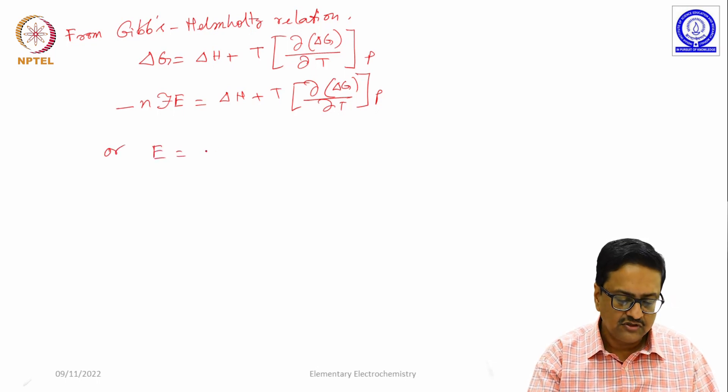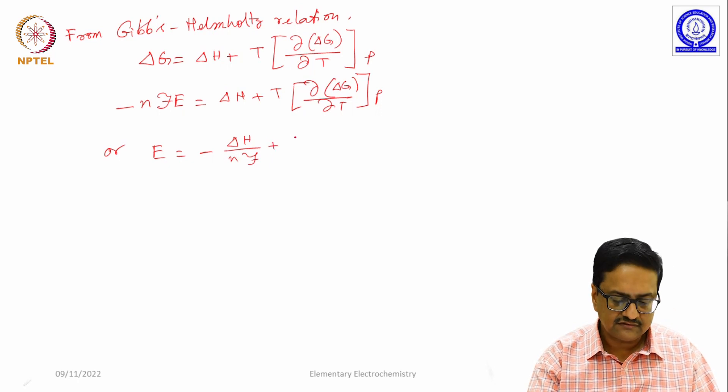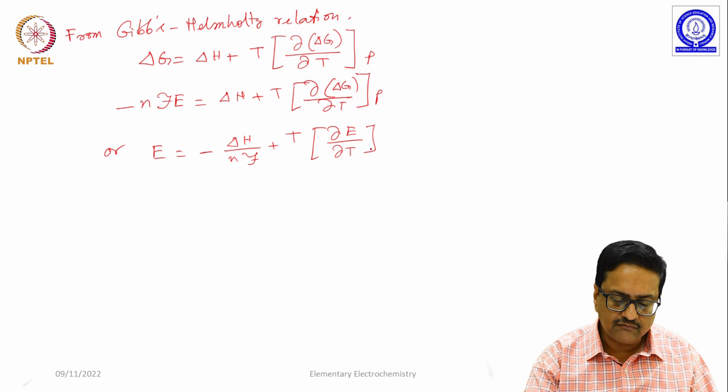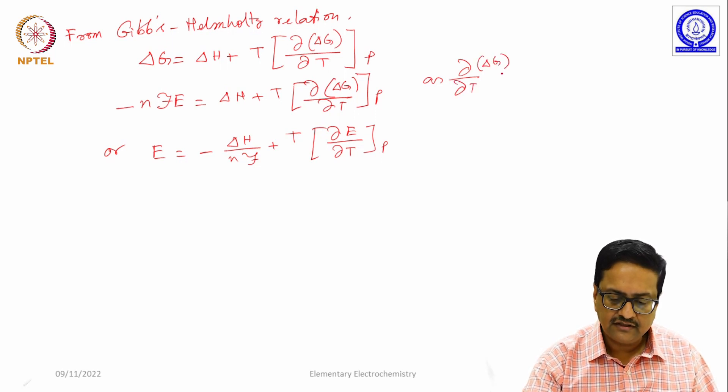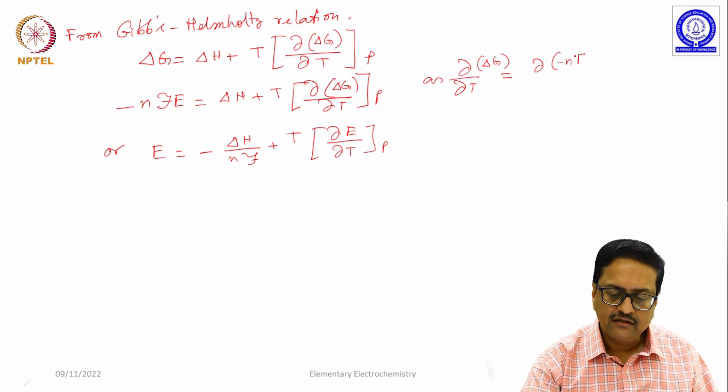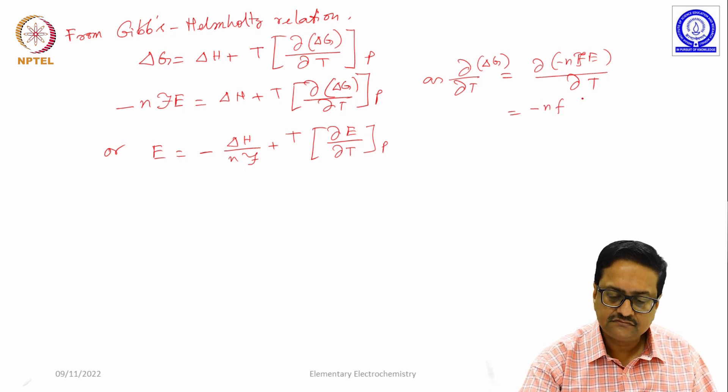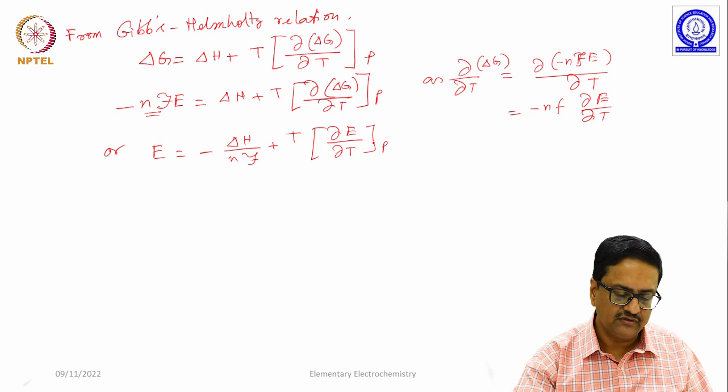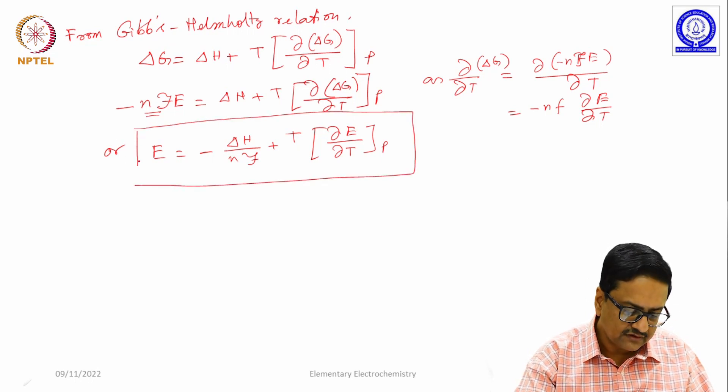Simply one can write E equal to minus delta H by N F plus T del E del T p, as del delta G is nothing but del minus N F E by del T or minus N F del E del T. That N F which was here, when it comes down gets cancelled, and you get this equation. The minus sign also gets removed.